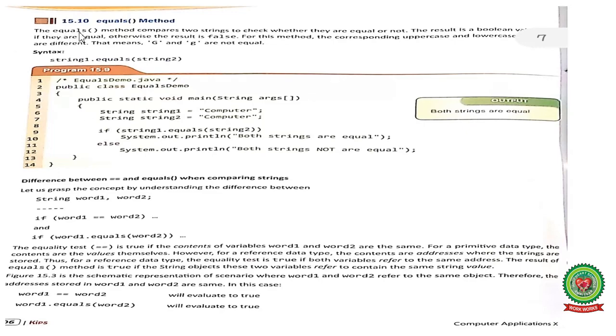The equals method compares two strings to check whether they are equal or not. If the strings are equal, then it will return true, else it will return false.